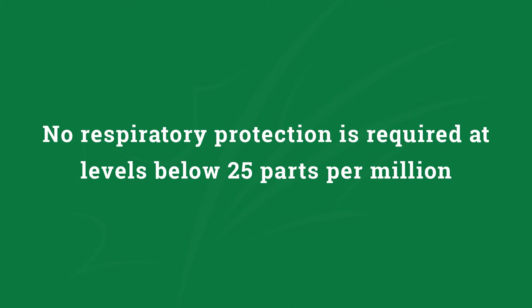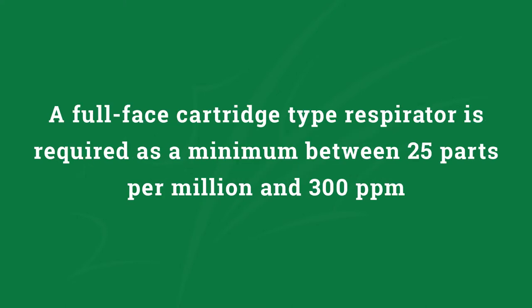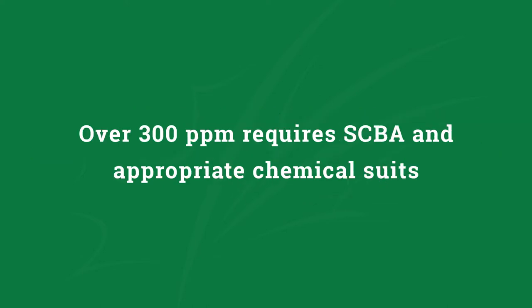In summary, no respiratory protection is required at levels below 25 parts per million of anhydrous ammonia. A full-face cartridge type respirator is required as a minimum between 25 and 300 parts per million. Supplied air respiratory protection is required over 300 parts per million, together with chemical suits appropriate for the situation. Note that in general, any filtering respirators may only be used when oxygen is greater than 19.5%; if not, a self-contained breathing apparatus must be used.